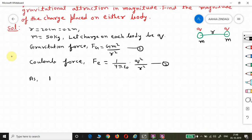As Fe equals Fg, we get one by four pi epsilon naught q² divided by r² equals Gm² by r². r² cancels out on both sides.